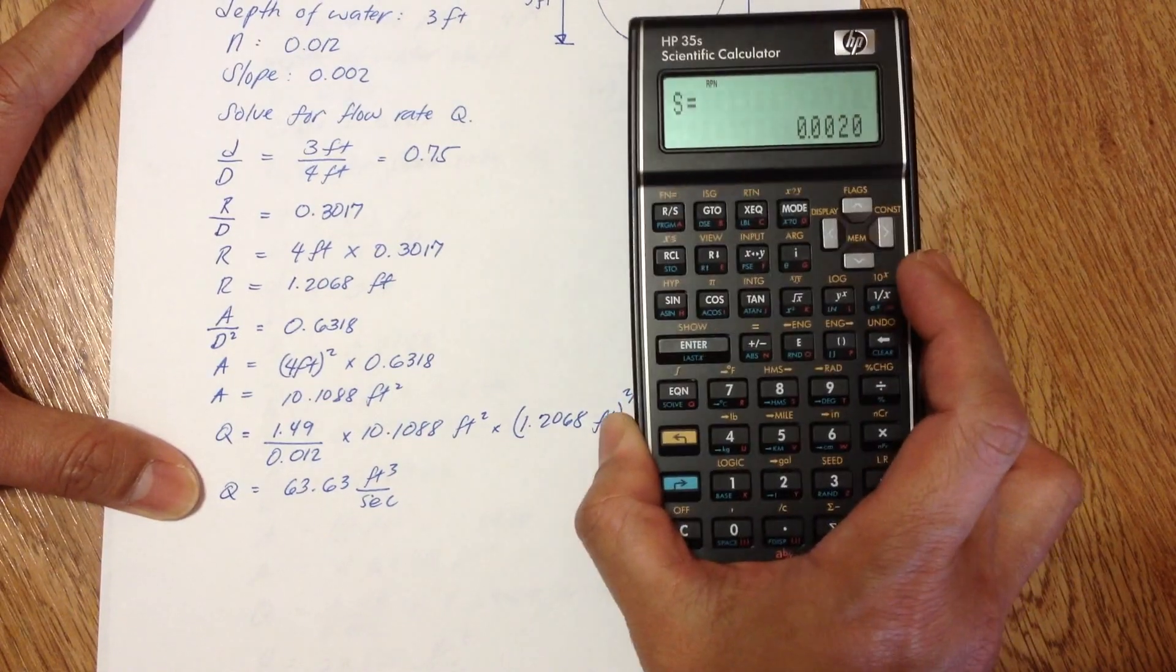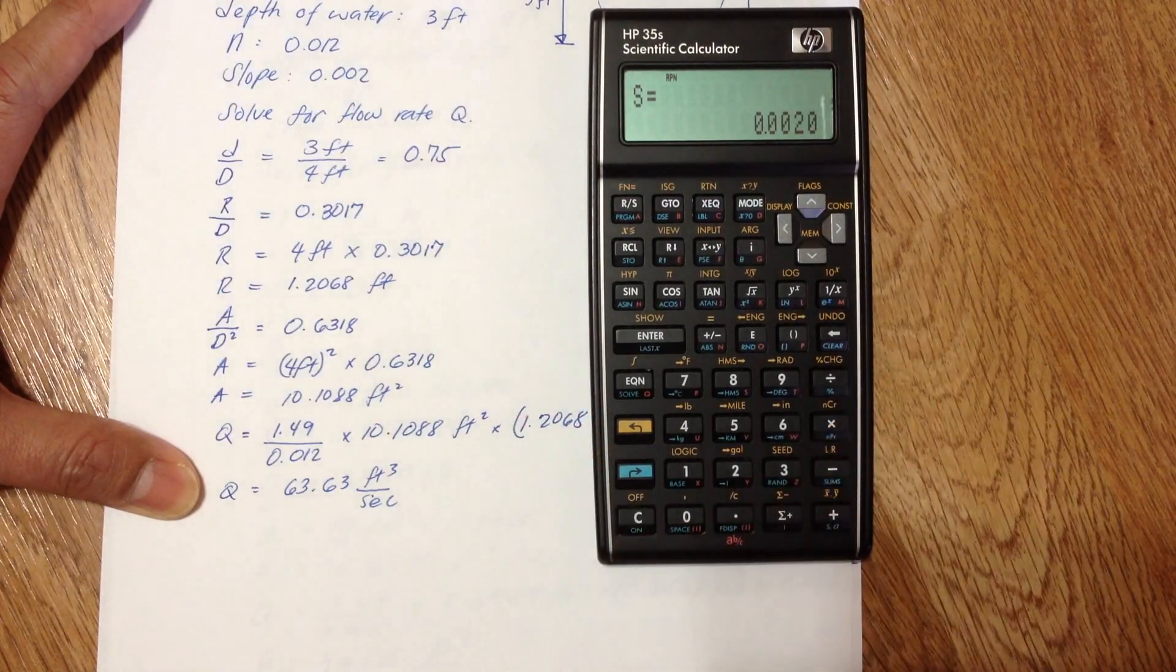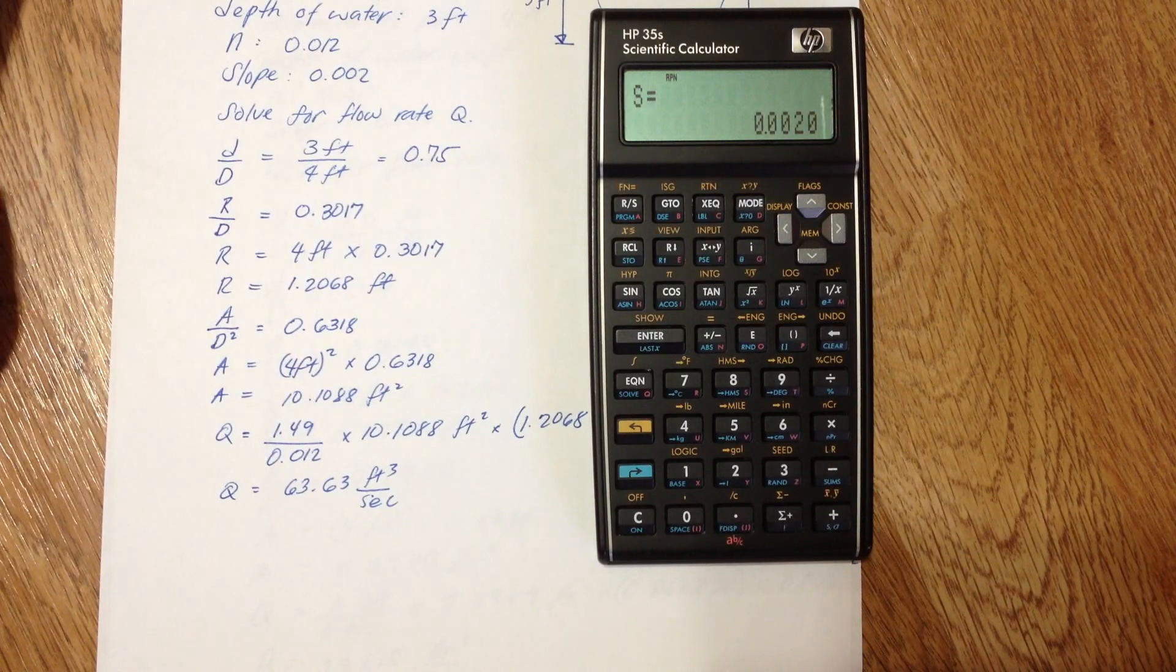Alright, that's how you use the equation for circular channel flowing partially full. Thank you for watching.